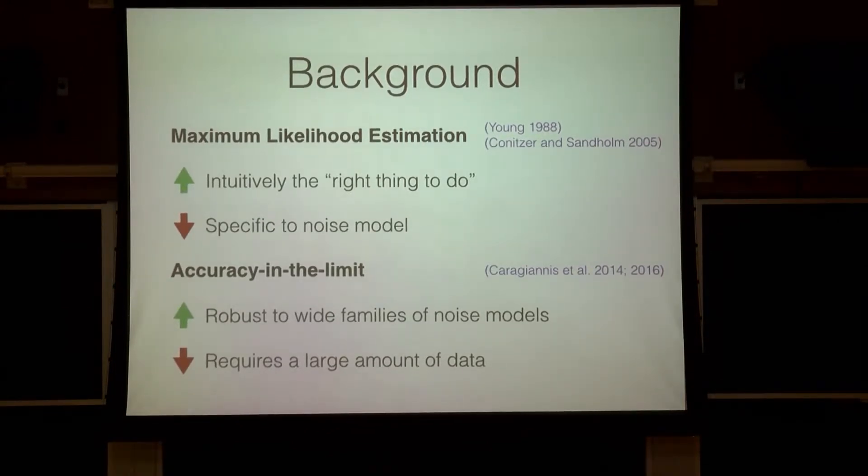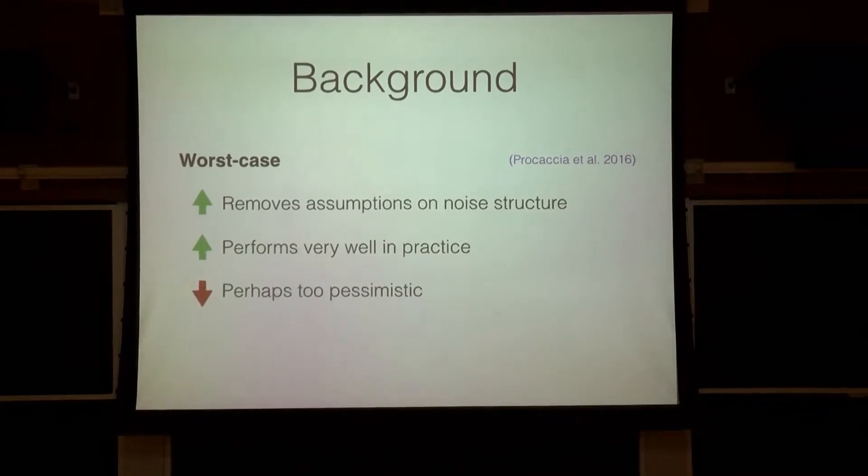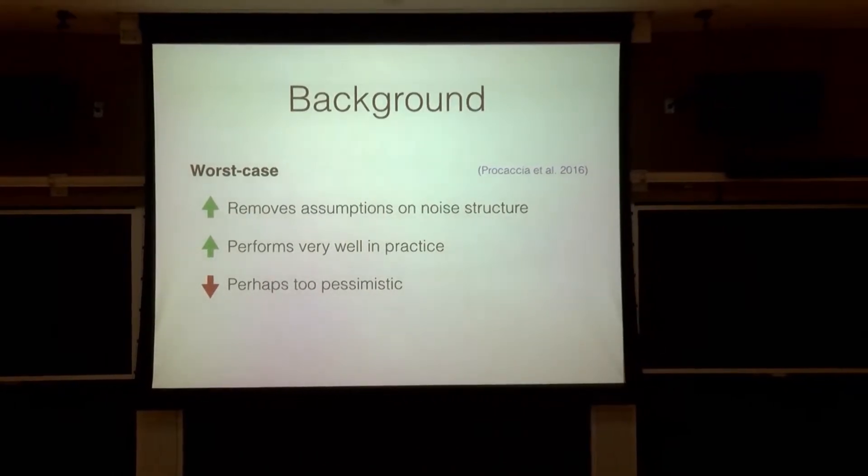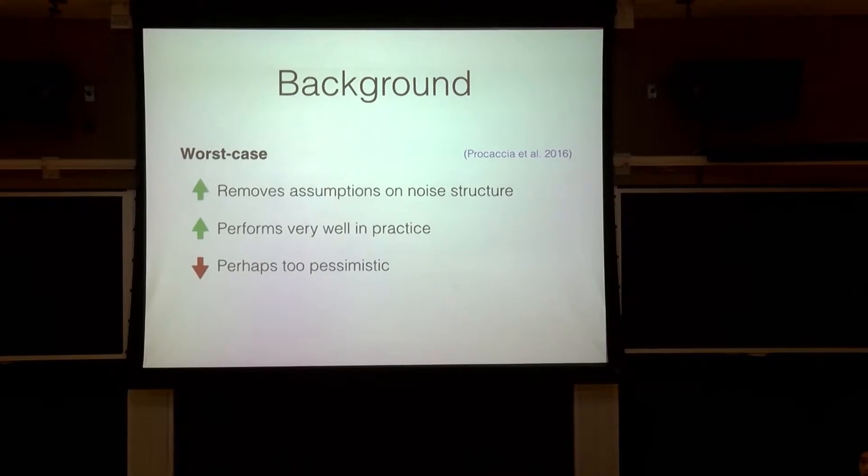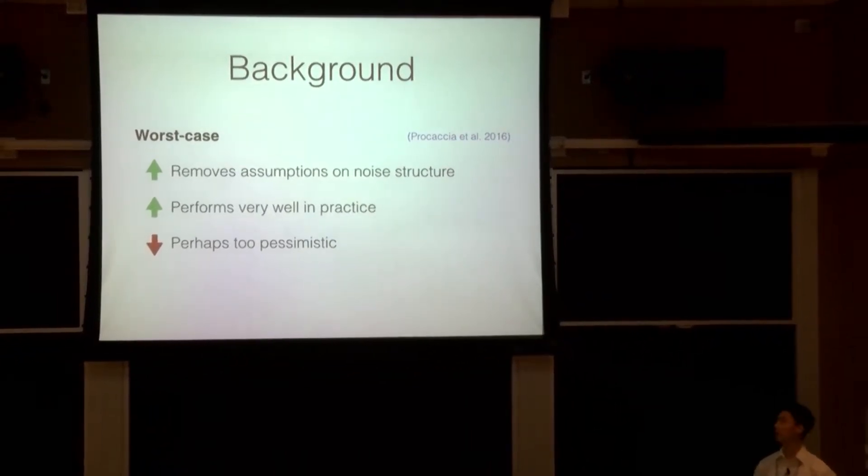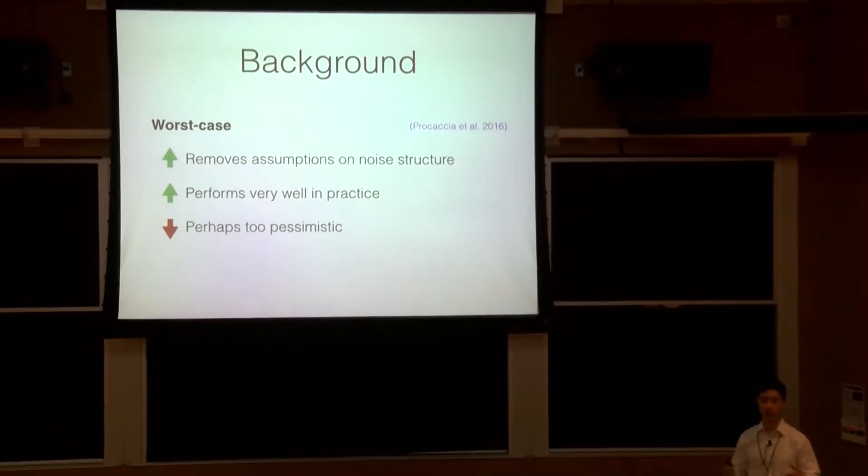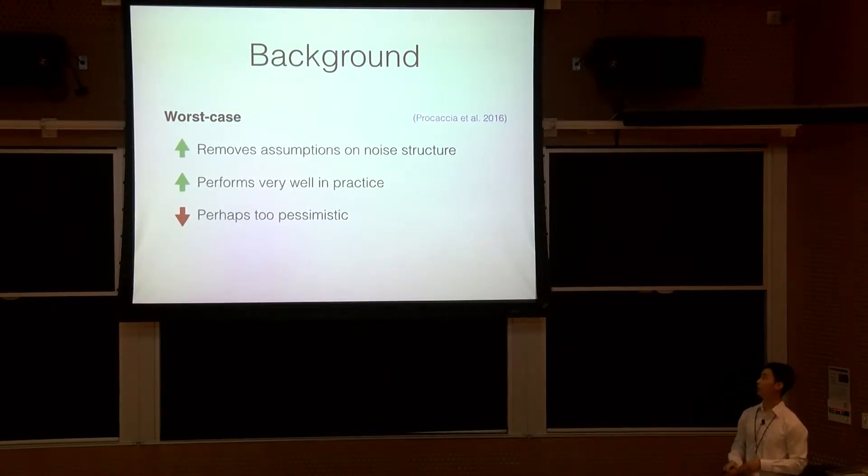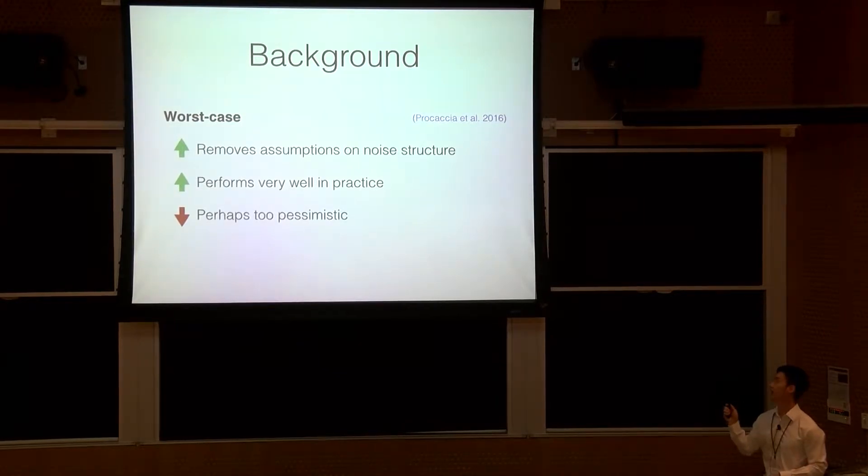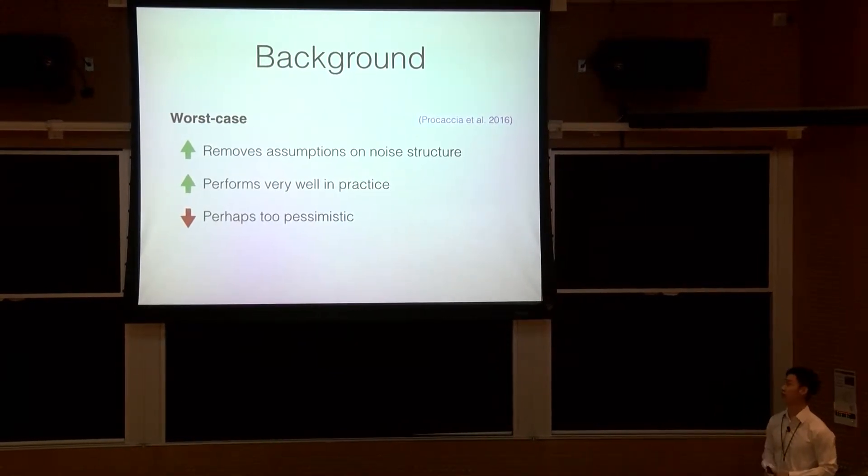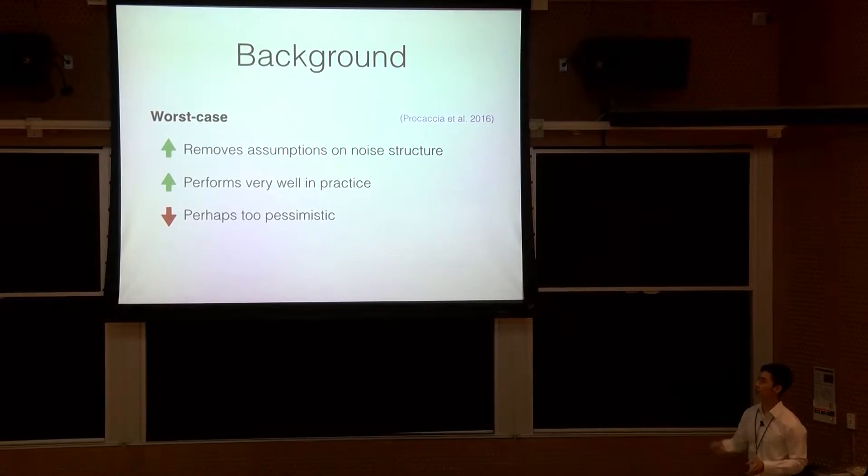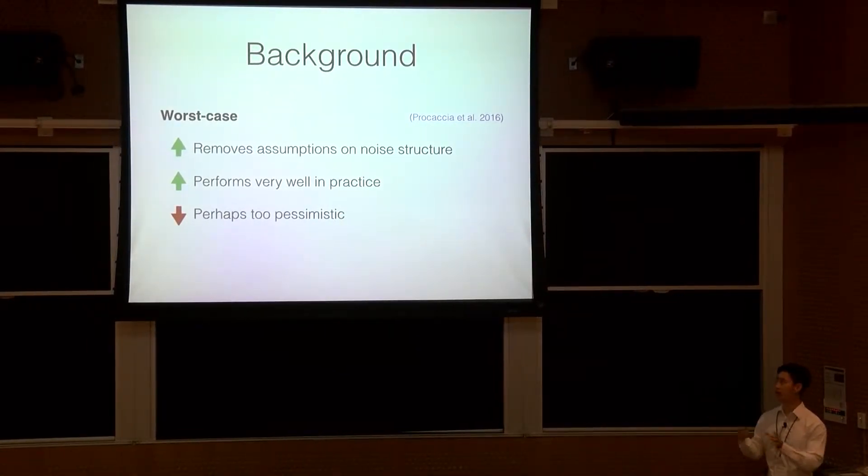So the way that my advisor tried to get around this last year was by introducing something called the worst case model with Nisarg Shah, who's right back there. And this essentially removes all assumptions on the structure of the noise in the votes. So instead of saying you have a family of noise models or one specific noise model, this just says at some level of abstraction, you have a bound on the amount of noise in the data, and that's all you know. And the votes can be adversarial subject to this bound. However, even though this is an unintuitive setting, it performs very well in practice. And that's actually the stuff that they put into practice on RoboVote for rankings right now. The only problem is, and I'll get more into this later, but it is perhaps too pessimistic. And in particular, the worst case assumption isn't actually that pessimistic, but the optimization function, which they tried to optimize over, was very pessimistic in this work.